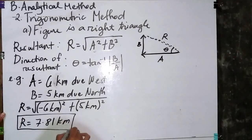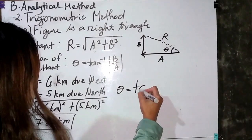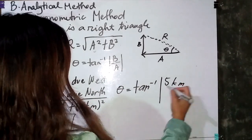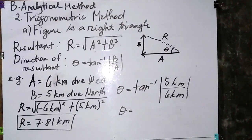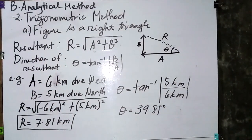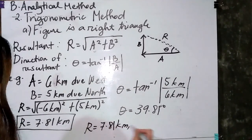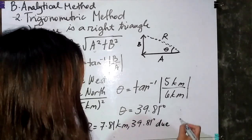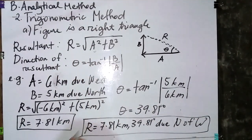This is our resultant. Next, for the angle or direction of the resultant, we use tan raised to negative 1 of b over a: 5 kilometers over 6 kilometers. The angle is 39.81 degrees. So our final resultant is 7.81 kilometers at 39.81 degrees north of west.